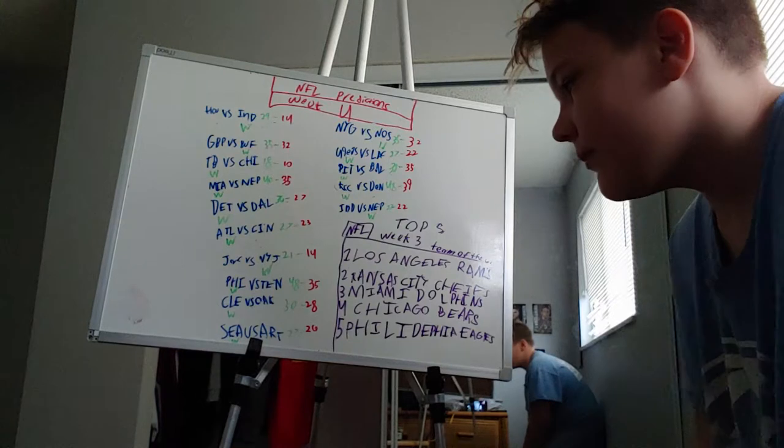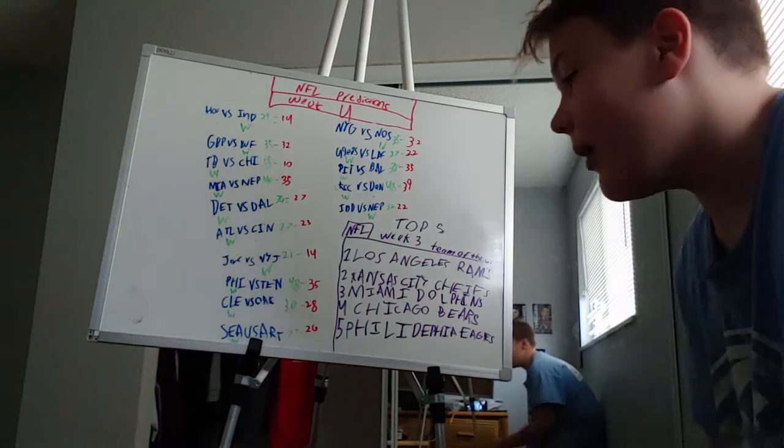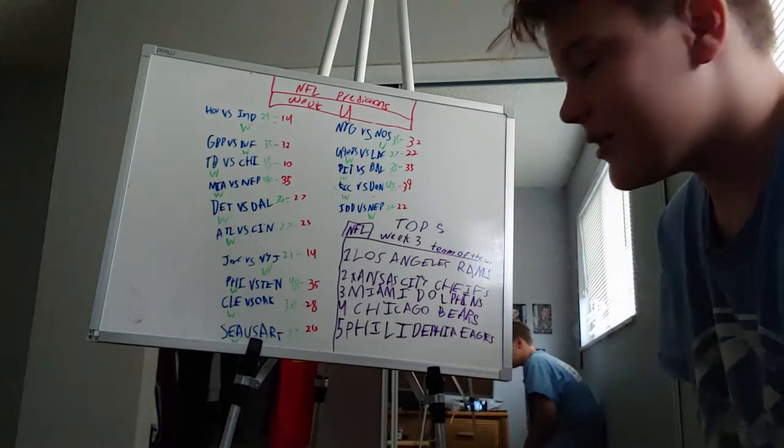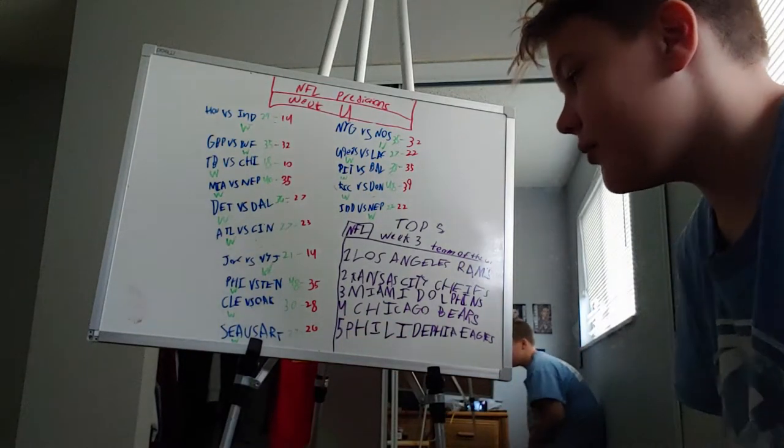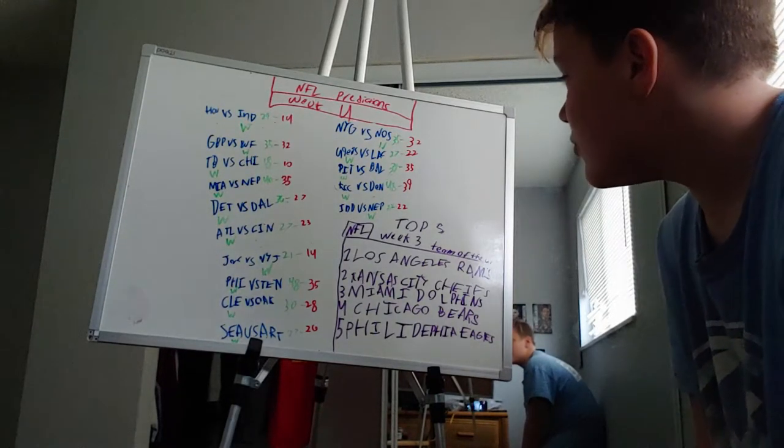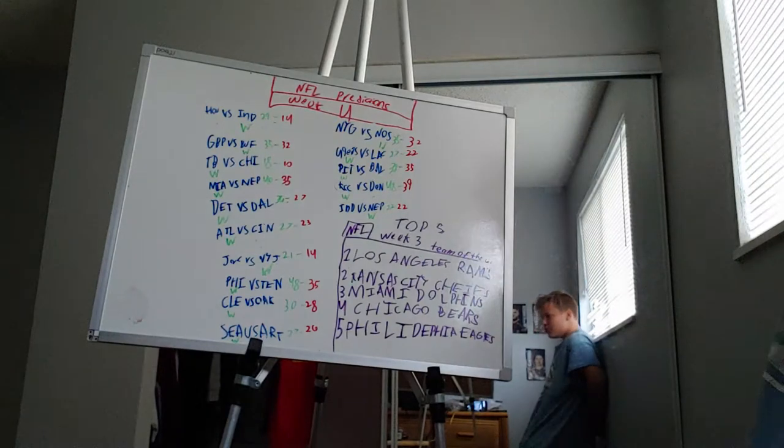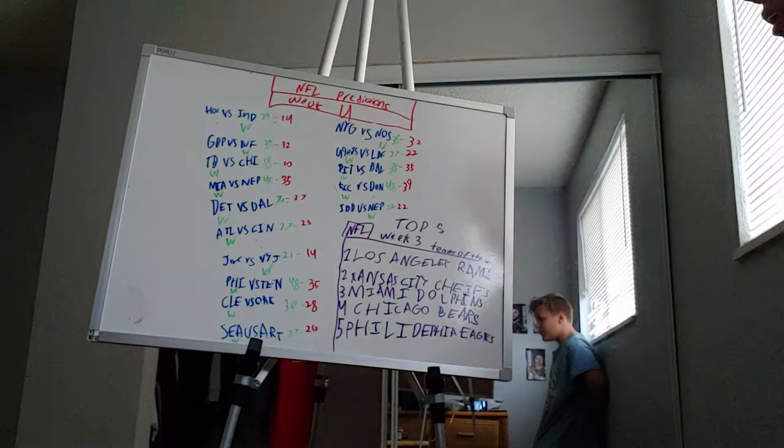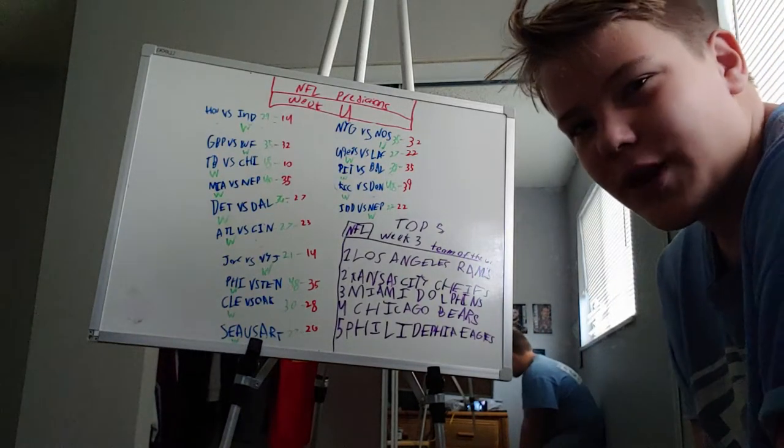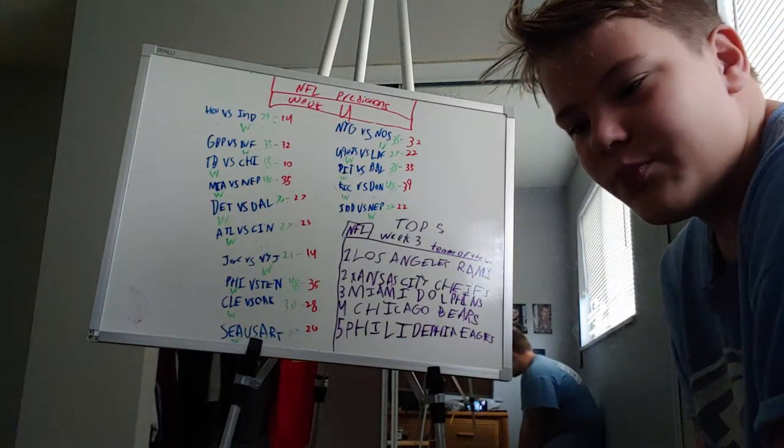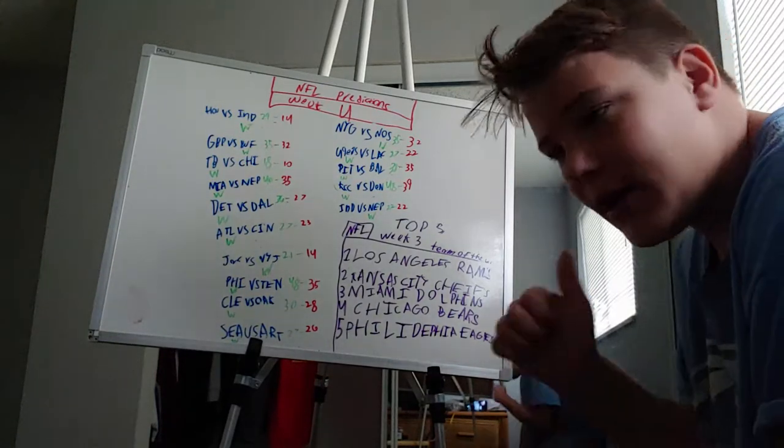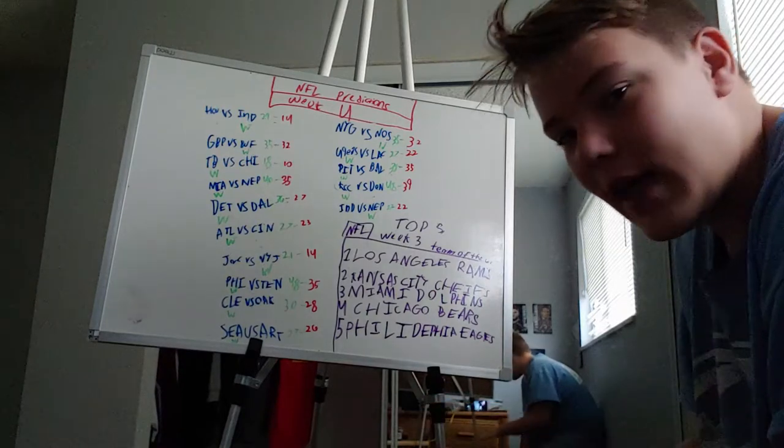Seattle versus Arizona. I didn't really put much thought into this one right here. So 27 to 26. New York Giants versus New Orleans Saints. I had New Orleans winning just because I feel like the Giants are just like the trailblazers. They have like a good quarterback, Odell Beckham Jr., and that's really it.